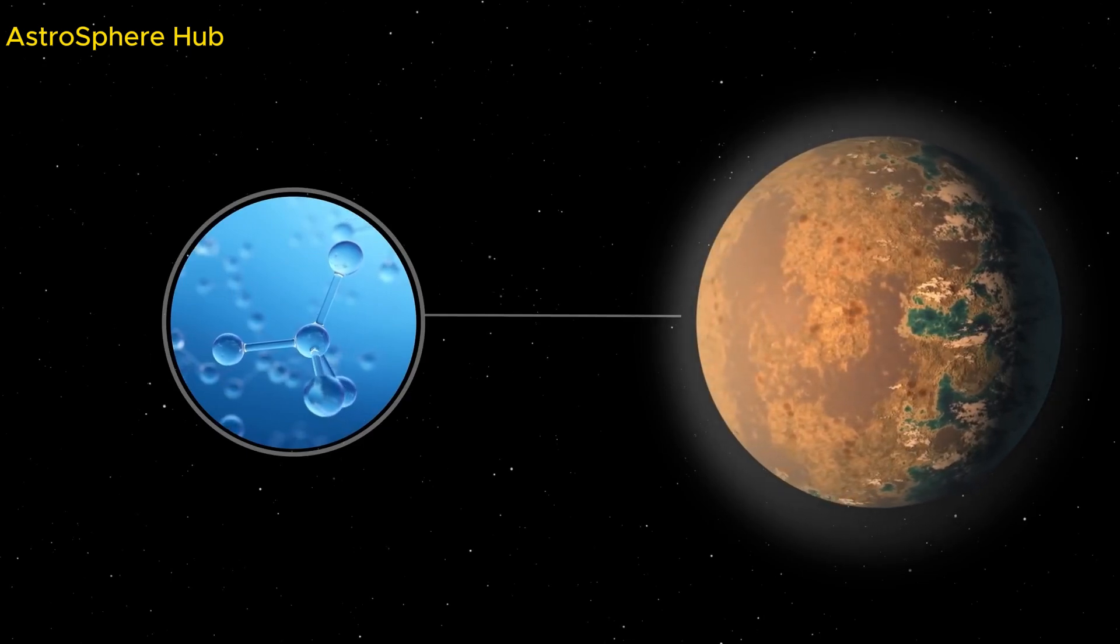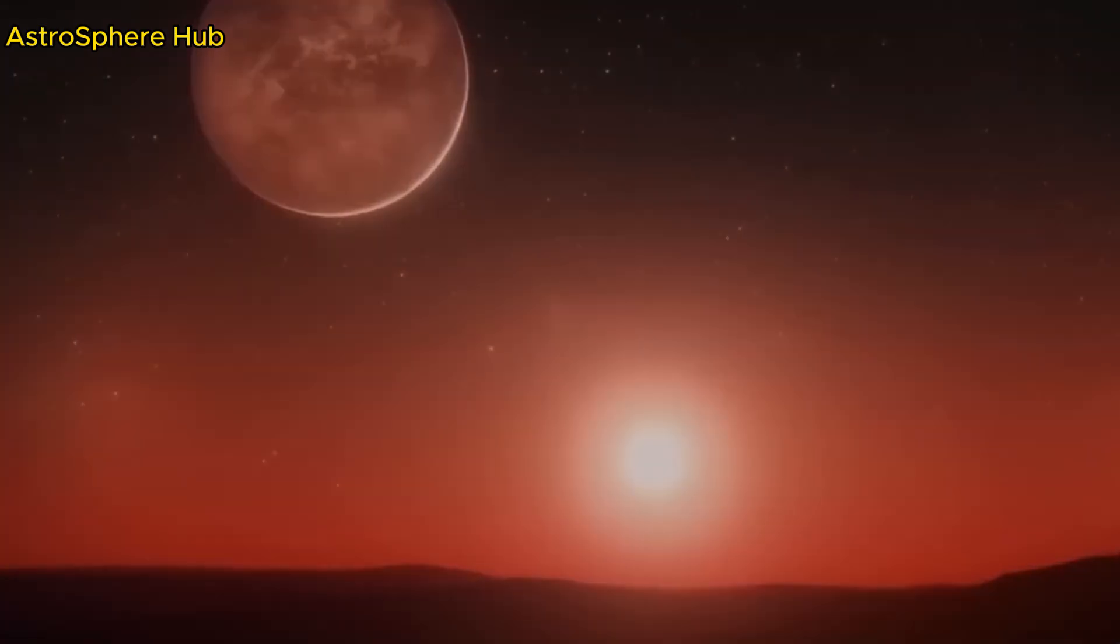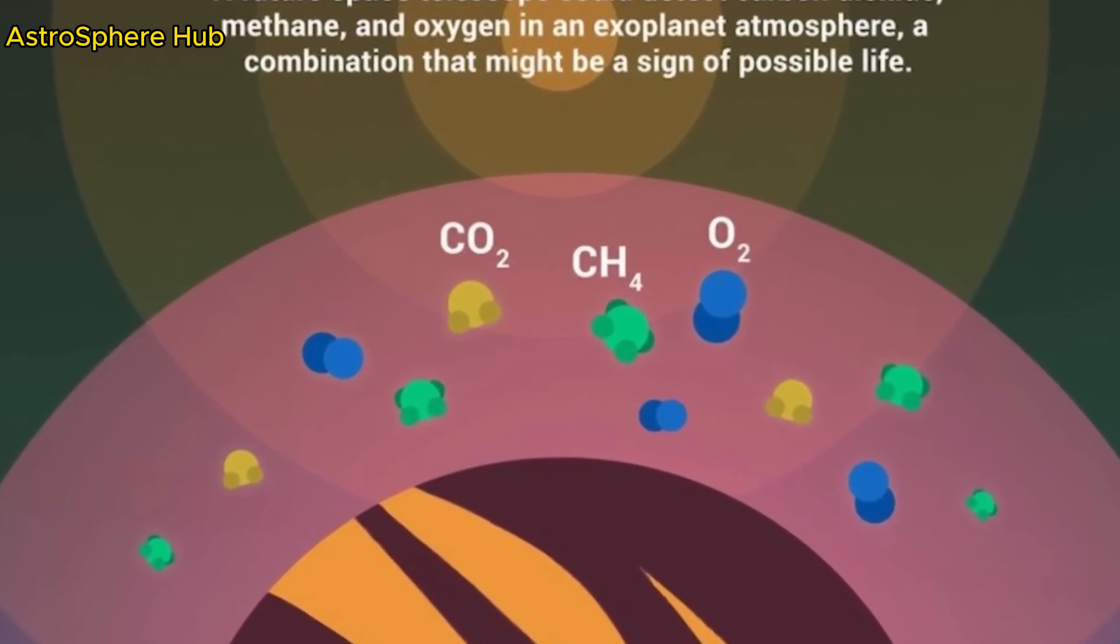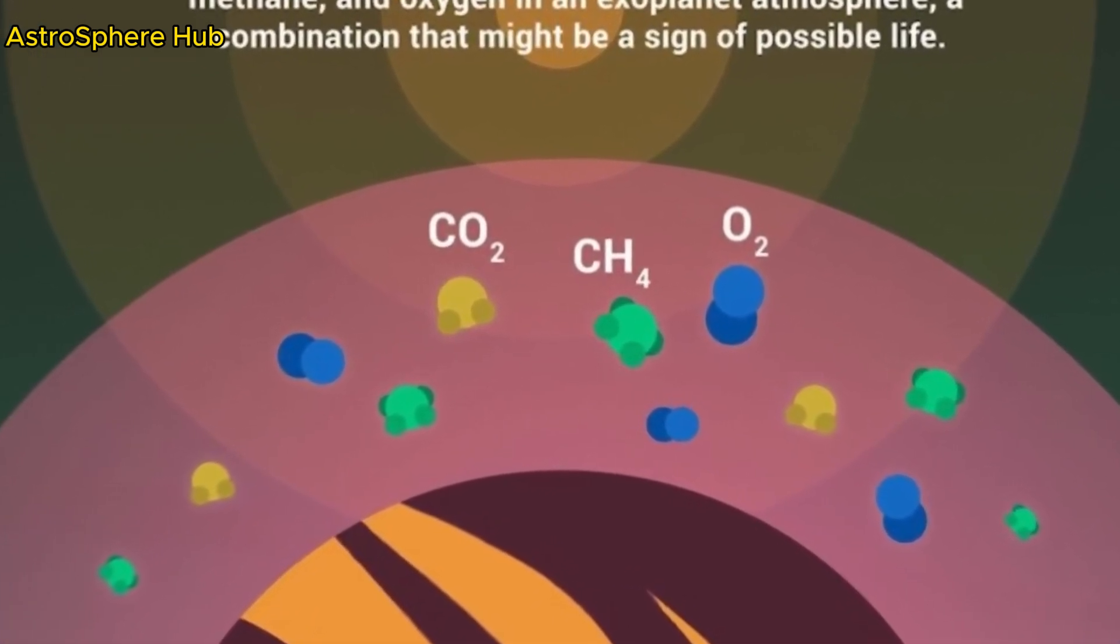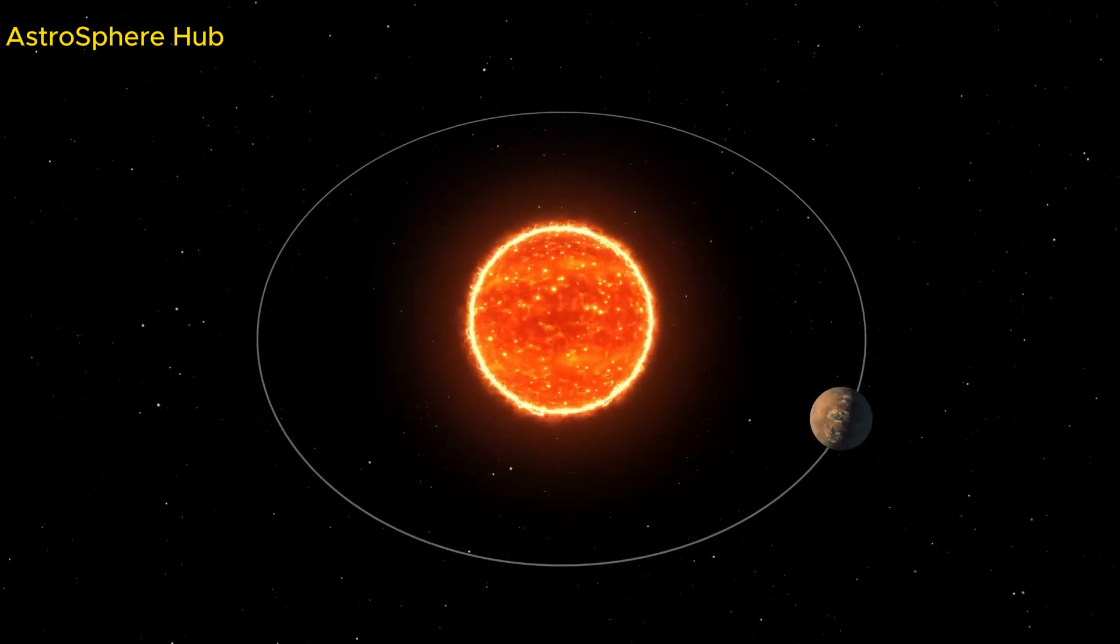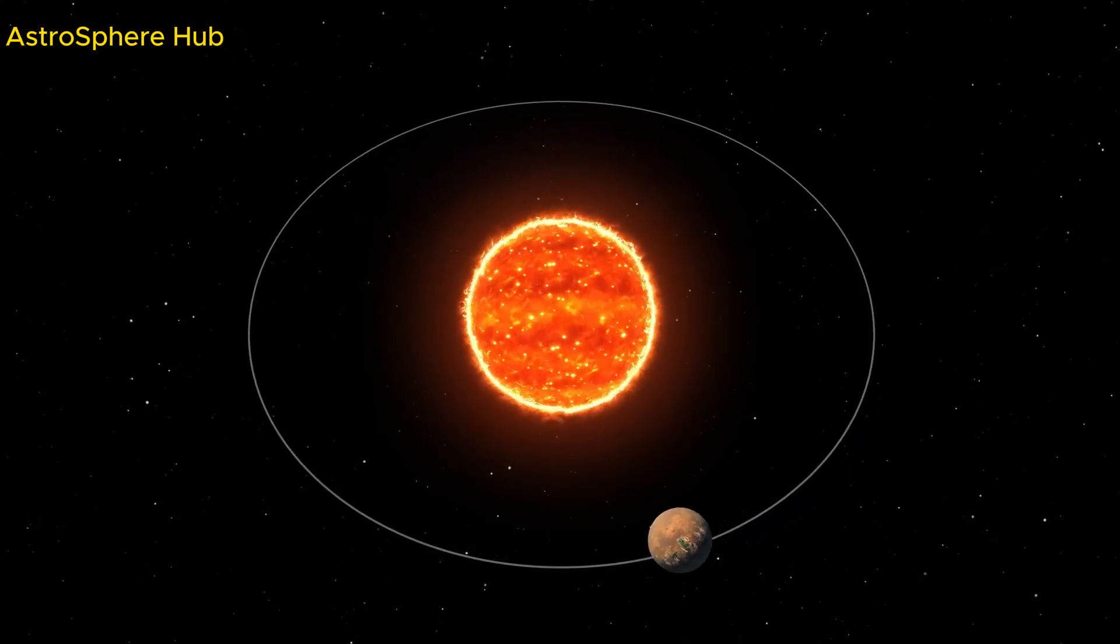In our galaxy, there are ten times more of these M-type red dwarf stars than stars like our sun. These little red dwarfs hold promise as potential cradles for life, with trillions of years for life to evolve and flourish in their cosmic neighborhoods.